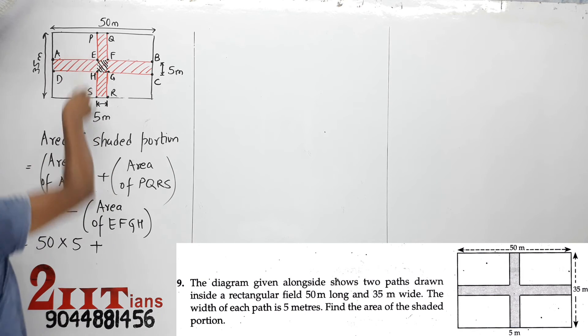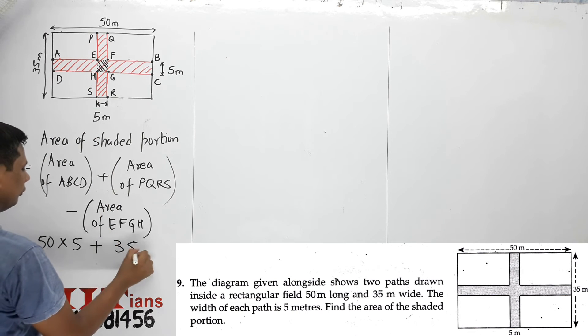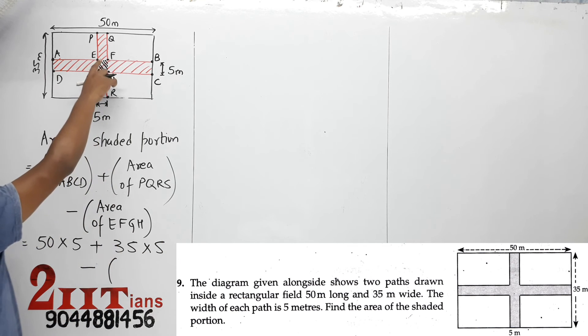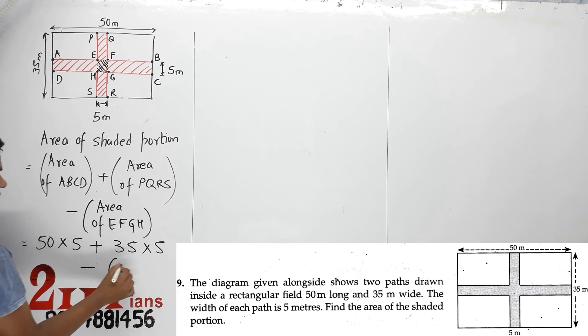Similarly, area of PQRS has length 35, width 5. And what will be the area of EFGH? 5 multiplied by 5.